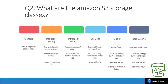Another storage class is Intelligent Tiering, where data is moved according to access patterns. It checks your access pattern and changes the storage tier accordingly. There is a fee for monitoring, and charges vary for different storage classes in S3.